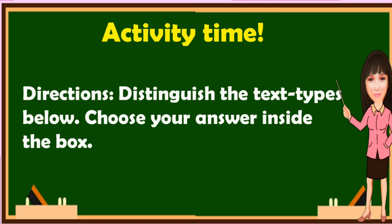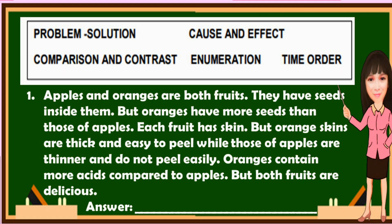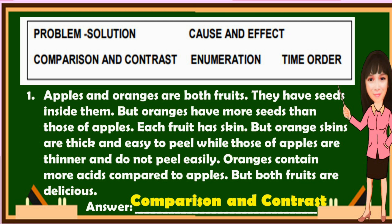Activity time. Directions: Distinguish the text types below. Choose your answer from the box. The choices are: problem-solution, cause and effect, comparison and contrast, enumeration, time order. Number one: Apples and oranges are both fruits. They have seeds inside them. But oranges have more seeds than apples. Each fruit has skin, but orange skins are thick and easy to peel, while apple skins are thinner and do not peel easily. Oranges contain more acids compared to apples. But both fruits are delicious. The answer is comparison and contrast.